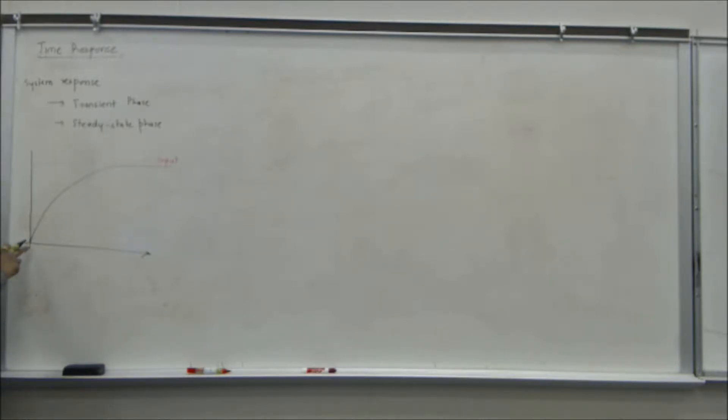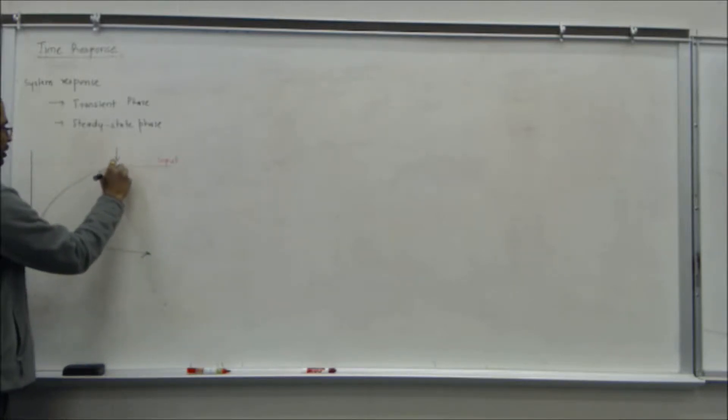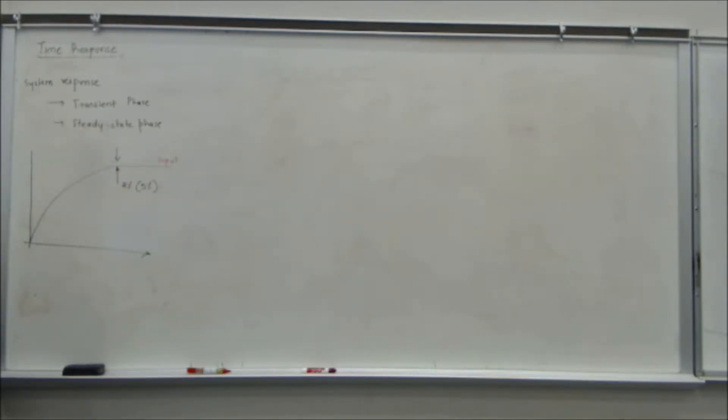There is a certain finite time it's going to take to get close to that input or track that input. So from that point onwards, we generally say you can define this. If this is within 2% or 5%, it depends on what kind of system you're dealing with, of the required input, the first time it gets there and continues to be there. From the initial phase to this point, this is your transient response.